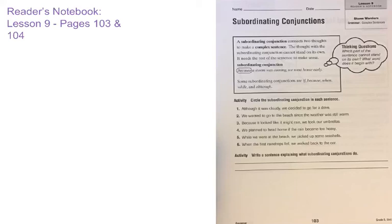We're going to continue our work from last week with conjunctions, and we're talking about subordinating conjunctions today. A subordinating conjunction connects two thoughts to make one sentence — a complex sentence.